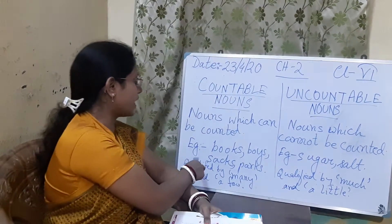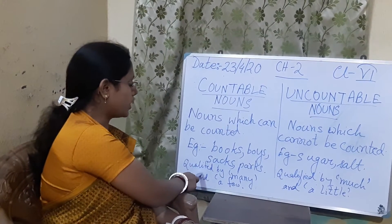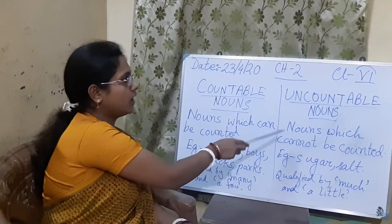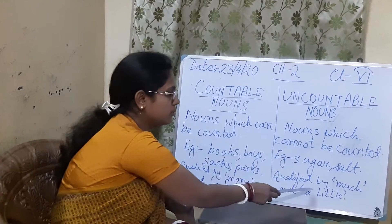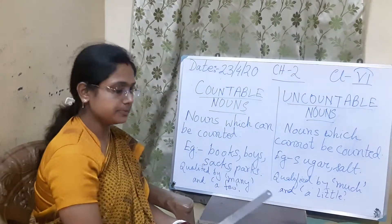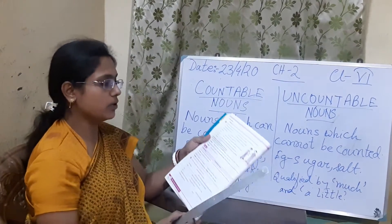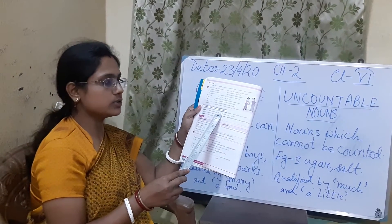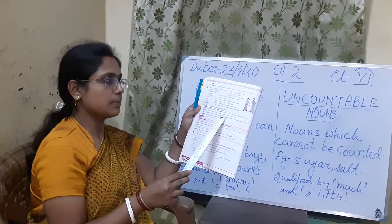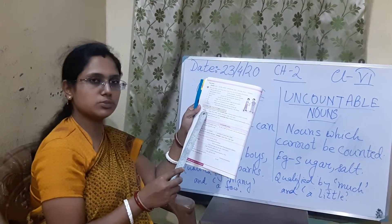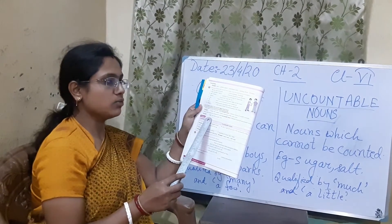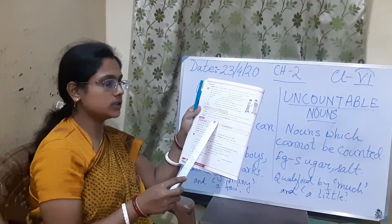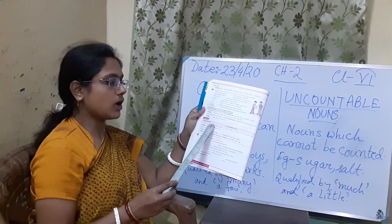Countable nouns are qualified by 'many' and 'a few'. Uncountable nouns are qualified by 'much' and 'a little'. Please look at your book — some more examples of countable nouns are bottles, houses, museums, and piles. Some more examples of uncountable nouns are liquid, gold, and iron.